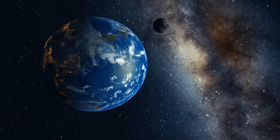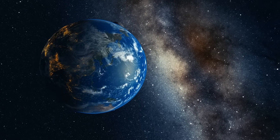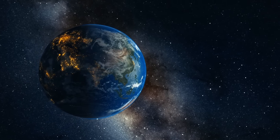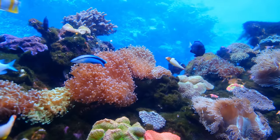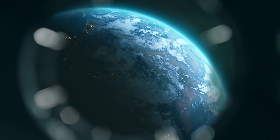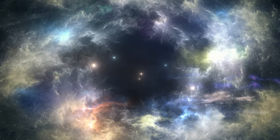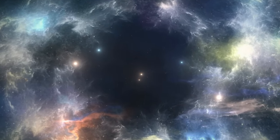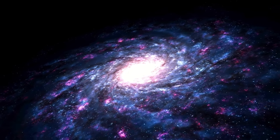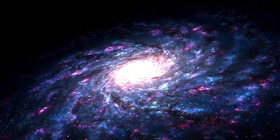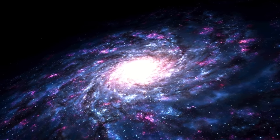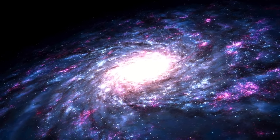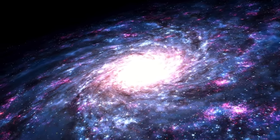This blue marble we reside on, with its life-supporting atmosphere and diverse ecosystems, is just one of the billions of celestial bodies in our Milky Way galaxy. Our world, teeming with life and culture, is nestled in a corner of the Orion Arm, a minor spiral arm that lies about 26,000 light-years from the center of our galaxy. The Milky Way itself is an enormous barred spiral galaxy composed of hundreds of billions of stars, each potentially hosting planets of their own. It is but one among the estimated 2 trillion galaxies that make up the observable universe.